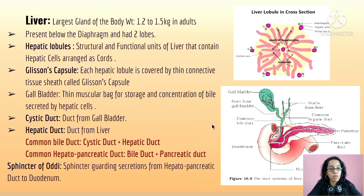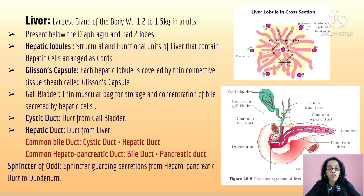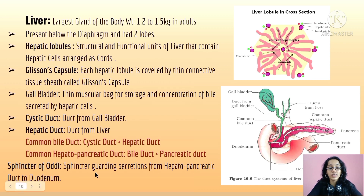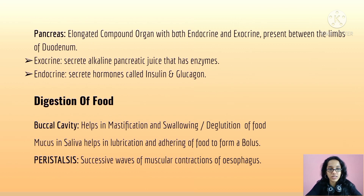The cystic duct is the duct from the gallbladder, and the hepatic duct is the duct from the liver. The common bile duct is formed by the cystic duct and the hepatic duct. The common hepatopancreatic duct consists of the bile duct and the pancreatic duct. The sphincter of Oddi guards the secretion from the hepatopancreatic duct to the duodenum.